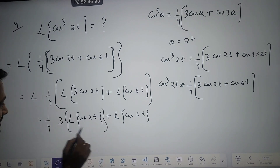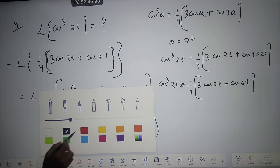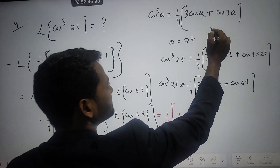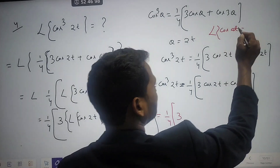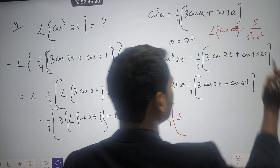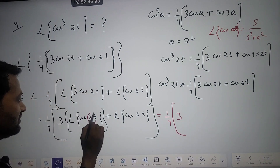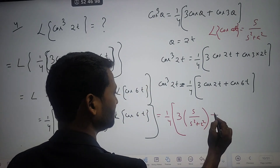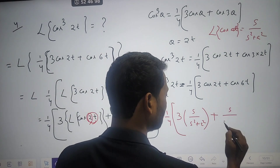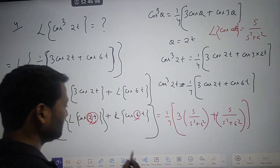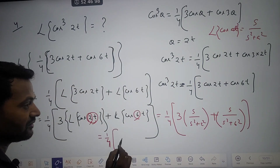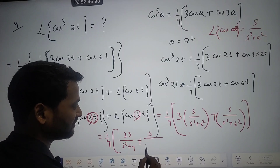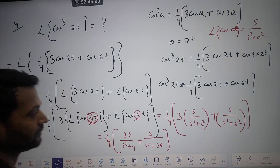Using the formula Laplace of cos(at) = s/(s² + a²): Laplace of cos(2t) = s/(s² + 4) since a = 2, and Laplace of cos(6t) = s/(s² + 36) since a = 6. Solving, the final answer is (1/4)[3s/(s² + 4) + s/(s² + 36)].